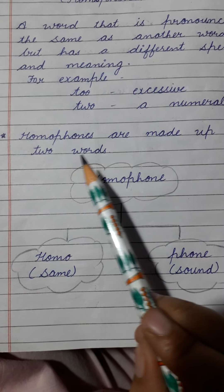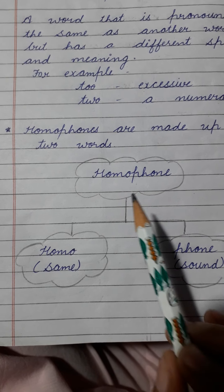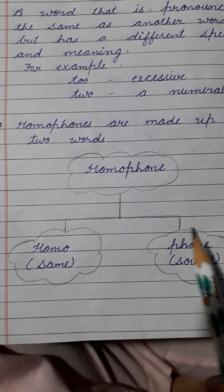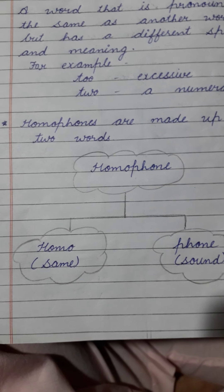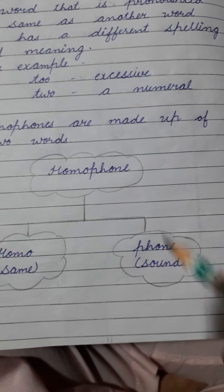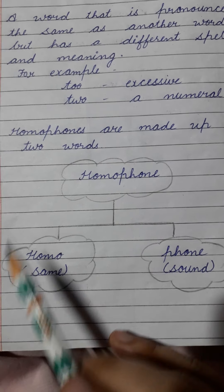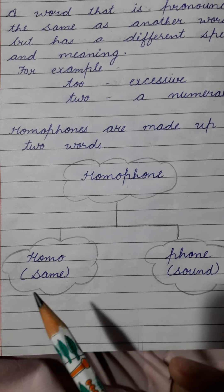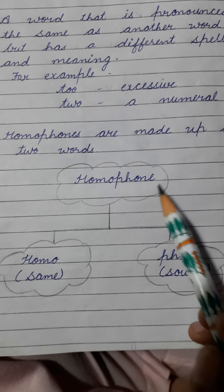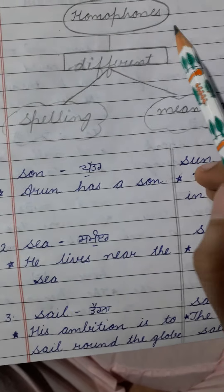Homophones are made up of two words — homo plus phone. Homo means same, phone means sound. Combining them together it becomes homophone — words having same sound. It means they have something in common or same but differ with some other things.